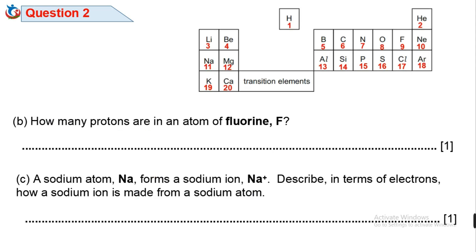Question 2b. How many protons are in an atom of fluorine? From the numbered periodic table, the atomic number of fluorine is 9. Since the atomic number is the number of protons in an atom, hence the number of protons in fluorine atom is 9.